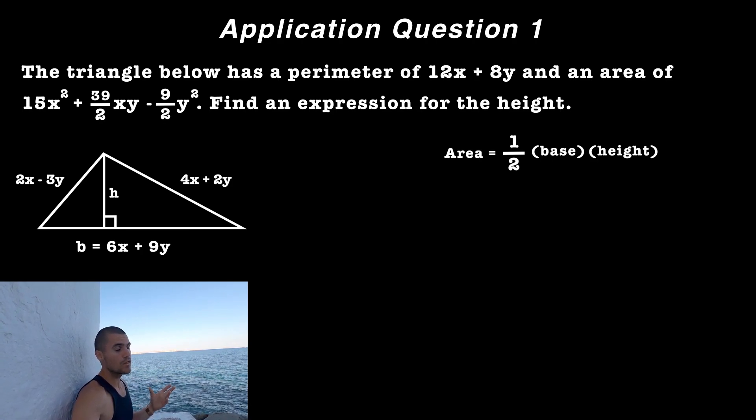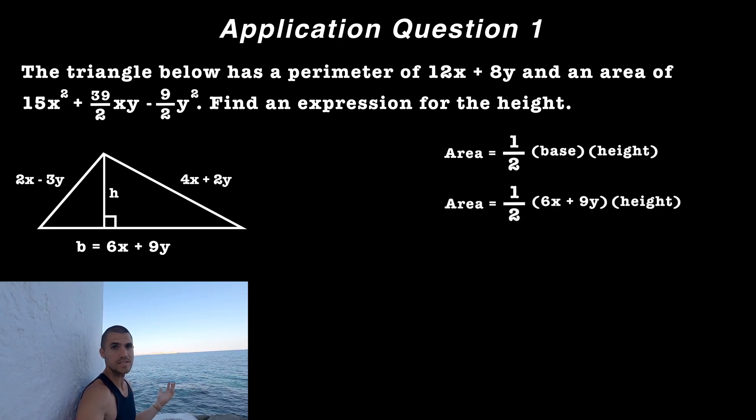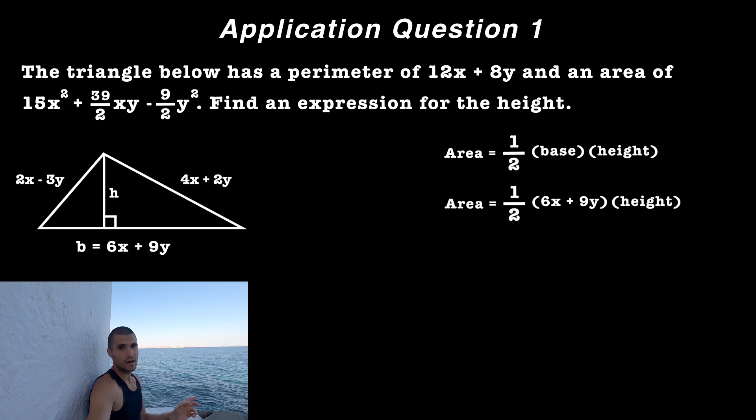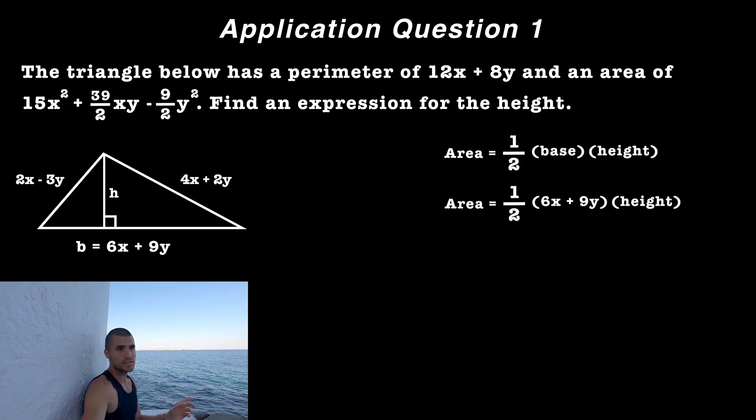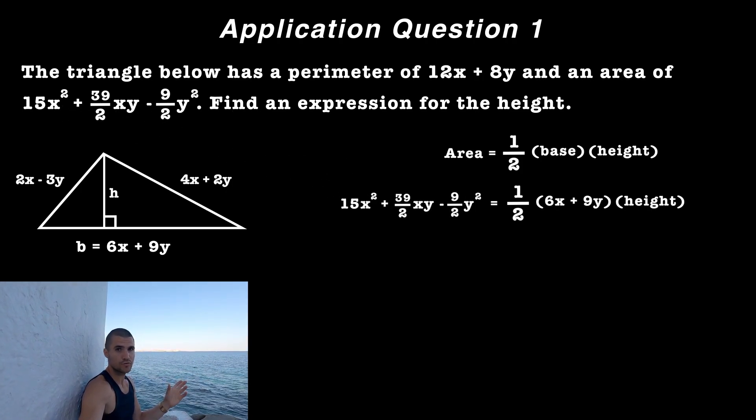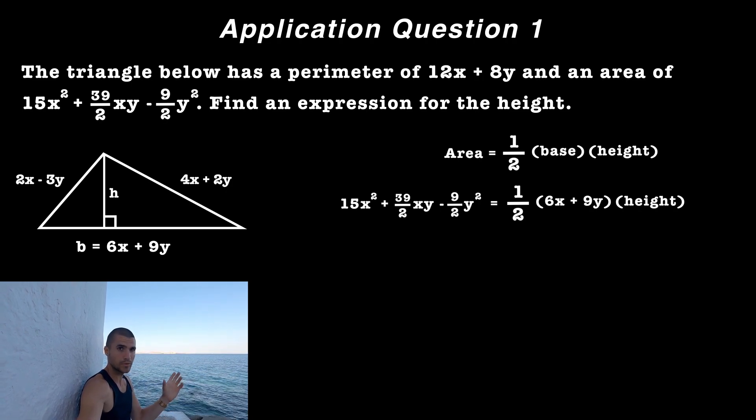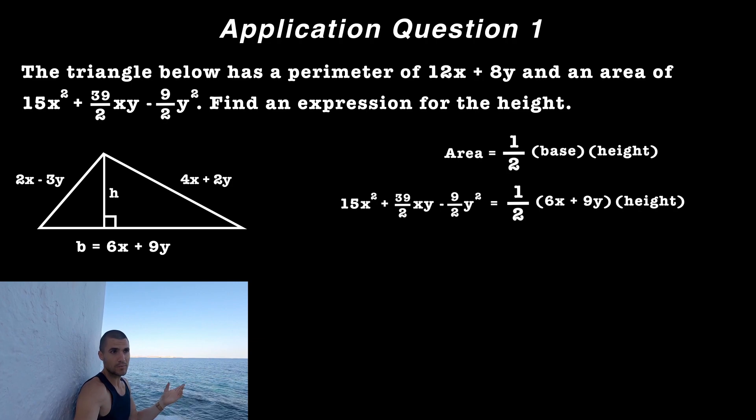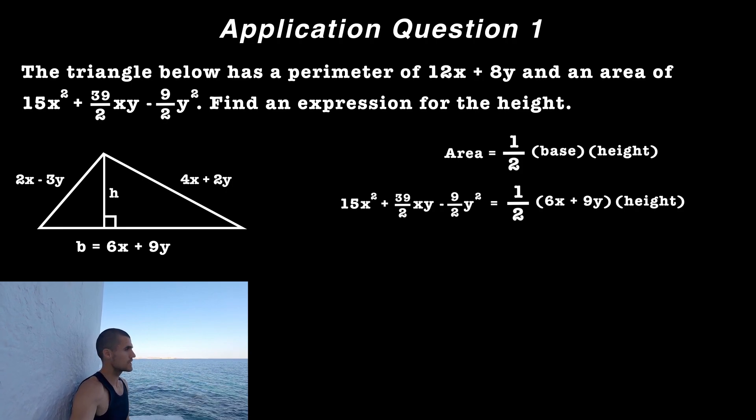And we know that the base, which is what we just solved for, is 6X plus 9Y. And now for the left side of the equation, let's actually bring in that expression for the area and put that instead of the capital A. And so notice that we would have that expression equaling one half times the base of 6X plus 9Y times the height.